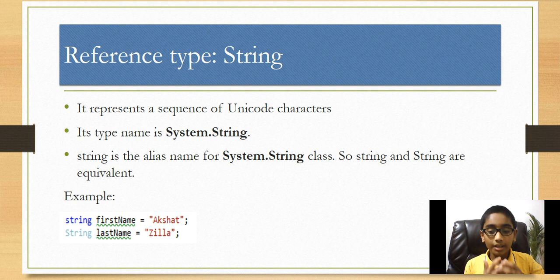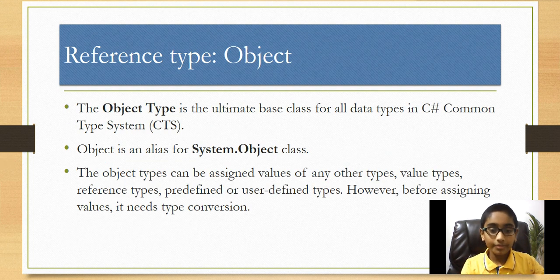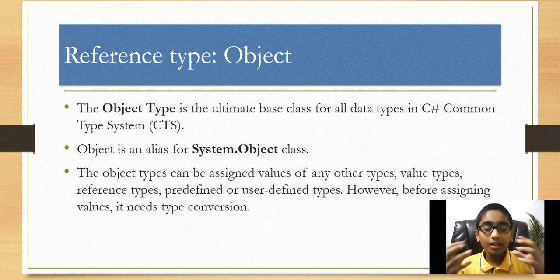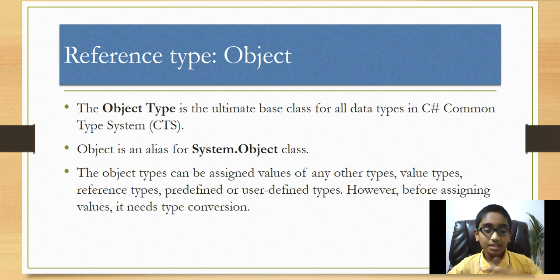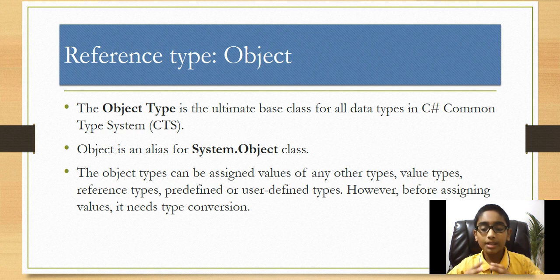Next we're going to talk about the object type. The object type is the ultimate base class for all data types in C-Sharp's Common Type System (CTS), which you'll learn about in a later video. Object is an alias name for the System.Object class. Object types can be assigned values of any other type — value types, reference types, predefined or user-defined types. However, before assigning values it needs type conversion. Type conversion between objects is called boxing and unboxing, which you'll learn about in detail in a later video.